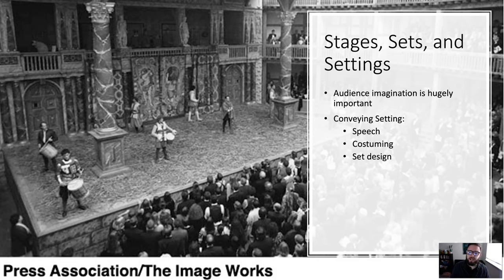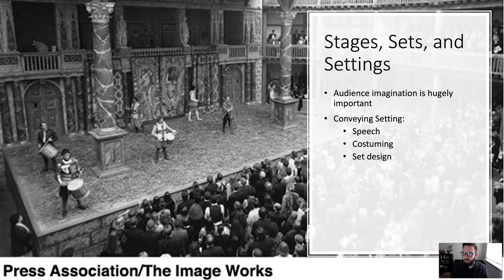First, through speech — characters can tell us when and where they are: 'Yes, we are here in Denmark, at Castle Elsinore, and the king has died.' Second, through costume — what characters are wearing can tell us where we are. For instance, in the opening scene of Hamlet, the first person we see is a man in a guard outfit, which tells us our location.